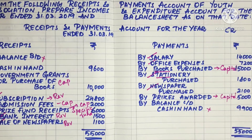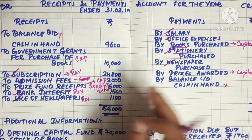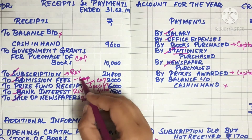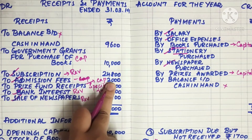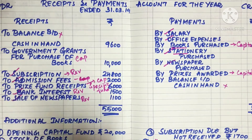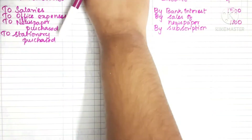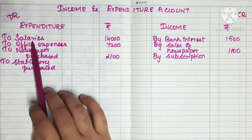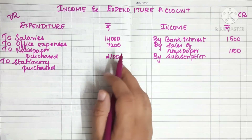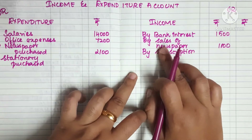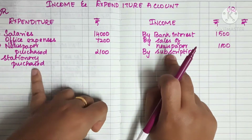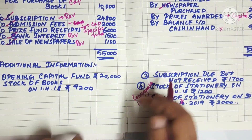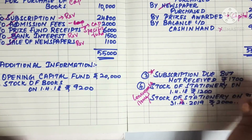So how do we do it? First, we include the admin fees. For salary, office expenses, and newspaper — newspaper is 2100. Next we have to include the sale of newspaper. There are some adjustments we need to make. How do we get the subscription adjustment? You can get the key at the bottom. Here is the stationery adjustment.